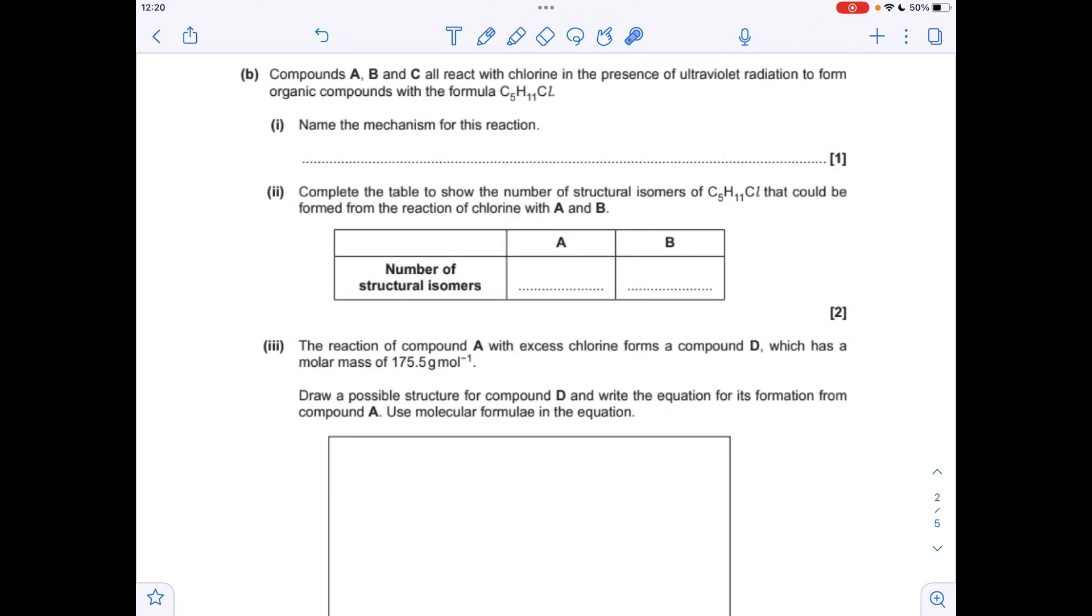Moving on to part B, what's the name of the mechanism for the reaction between an alkane and chlorine in the presence of UV? Radical substitution. Next part, what's the number of structural isomers possible for the monosubstitution? That's with one chlorine in, so we could have chlorine here,